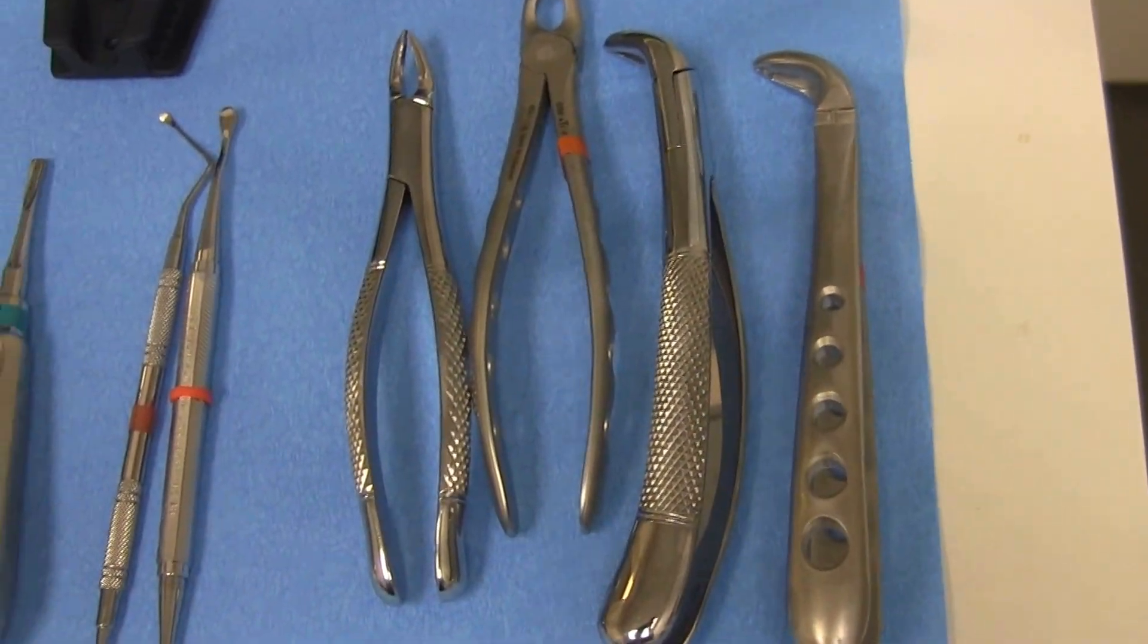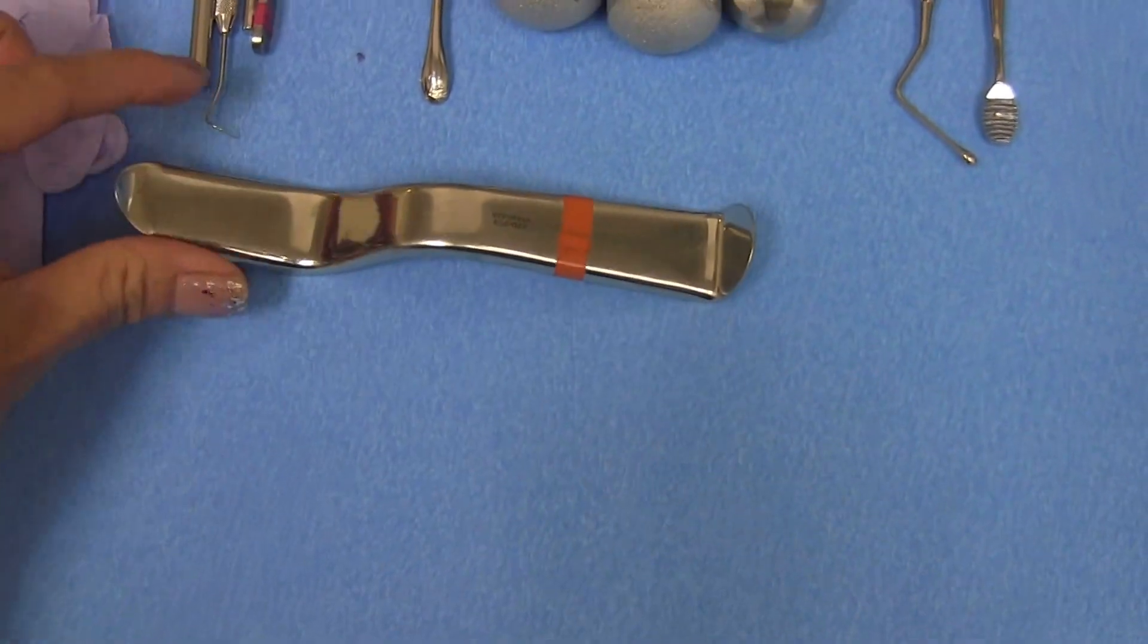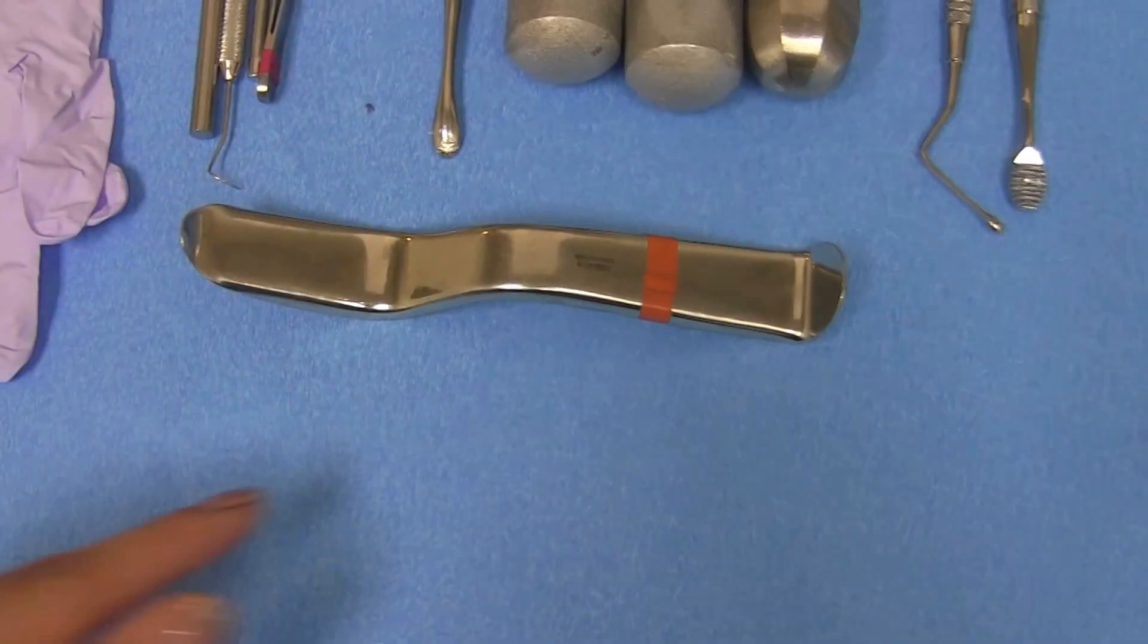Some other specialty items you also want to get familiar with is the cheek retractor, which can sometimes help if we're working on posterior teeth.